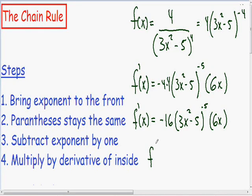And this can be simplified even further. The negative 16 can be multiplied by the 6x, and negative 16 times 6x is just negative 96x.